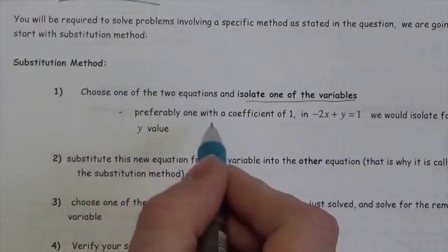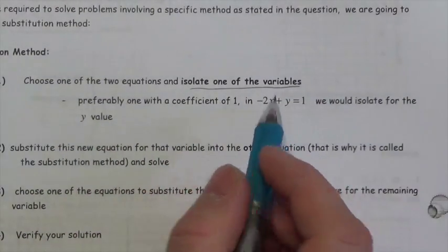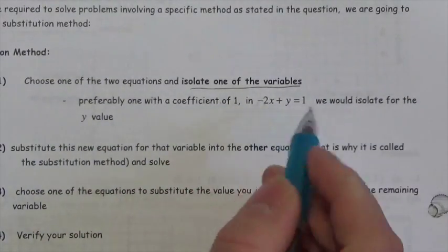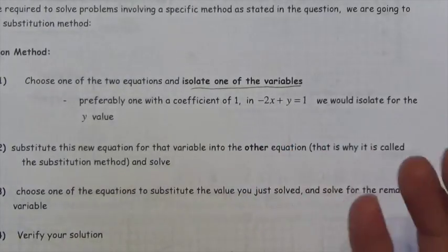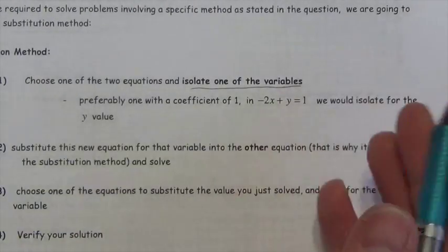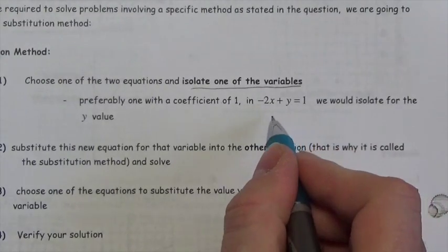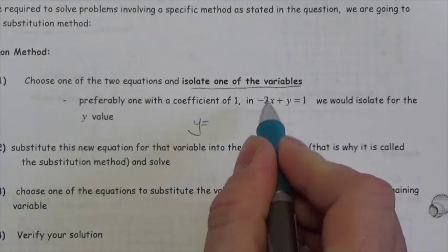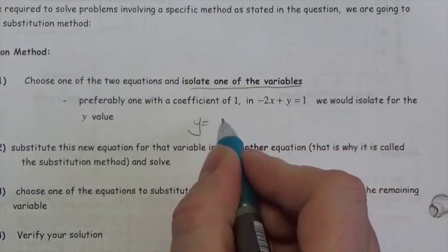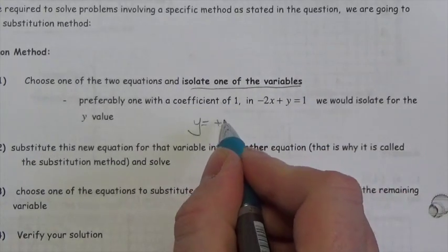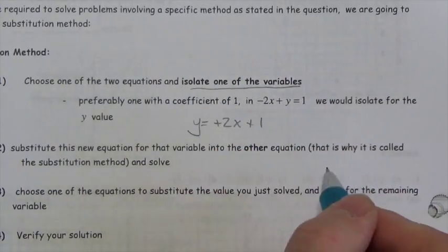Almost always, you're going to try to isolate the one that has a coefficient of 1. For example, if y has got a coefficient of 1, to isolate that, all you'd have to do is take that negative 2x term and move it to the other side by changing its sign, and it becomes positive 2x plus 1.